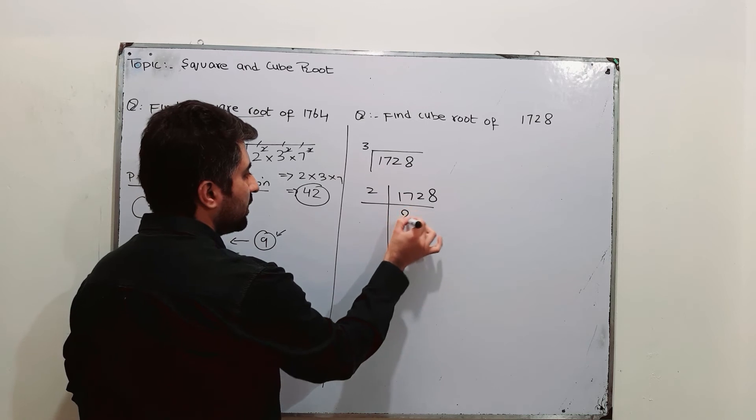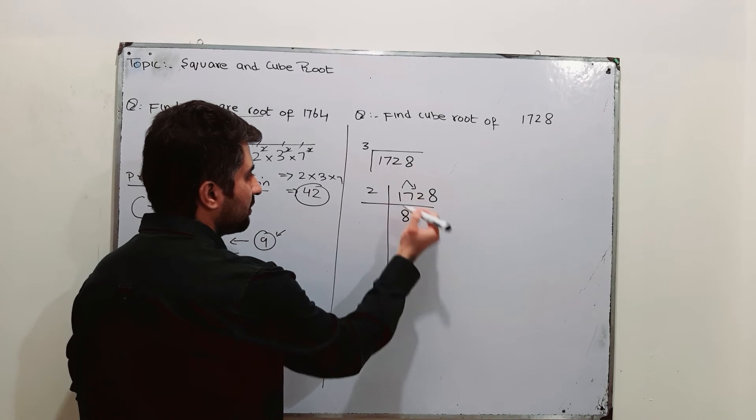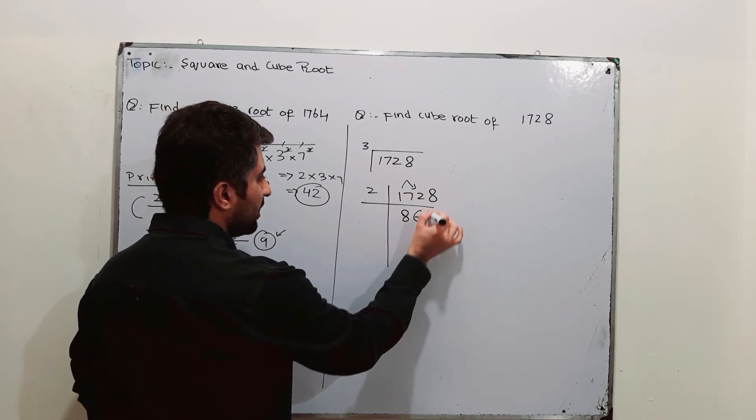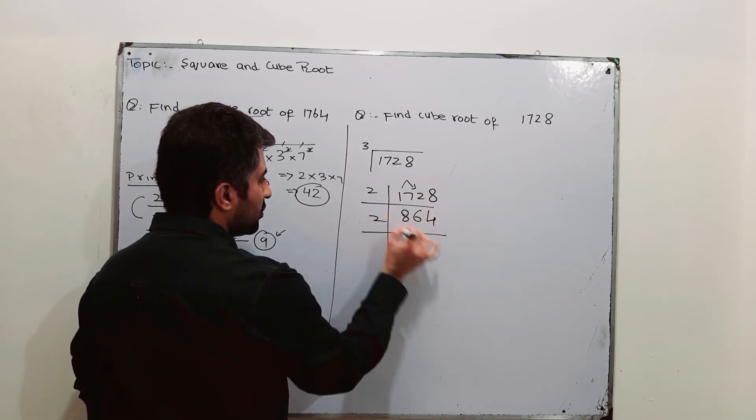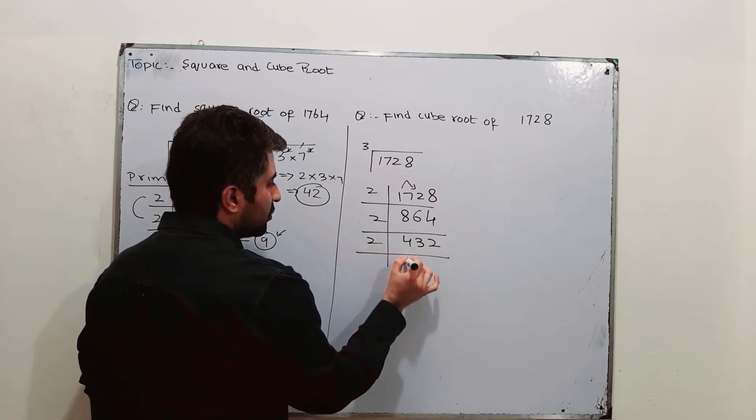2, 8 times 16. 1 will be carried to the next digit. It will become 12. 2, 6 times 12. 2, 4 times 8. 2, 4 times 8. 2, 3 times 6. 2, 2 times 4. 2, 2 times 4.